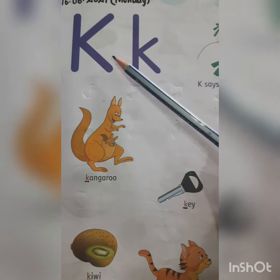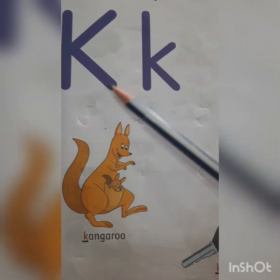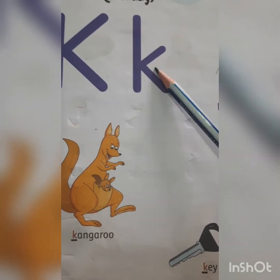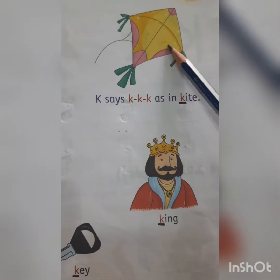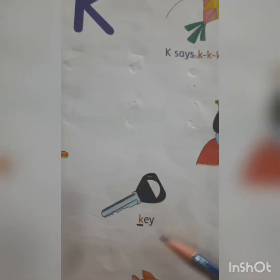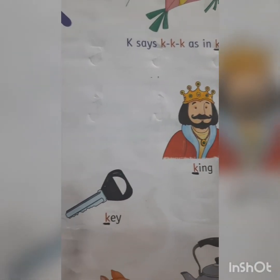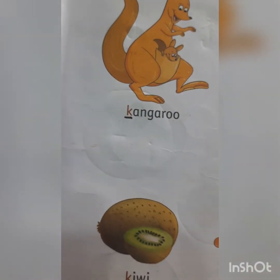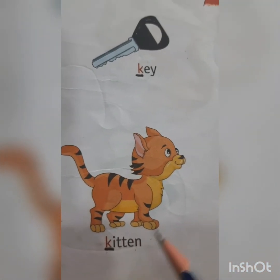Which letter is this children? This is capital K and this is small k — mama K and baby K. What is the sound of letter K? It is 'K' in kite. K-I-T-E. Kite. You have to recognize the letters and say the name of the picture. K-I-T-E. Kite. K-A-N-G-A-R-O-O. Kangaroo. K-E-Y. Key. K-I-N-G. King. K-I-W-I. Kiwi. K-I-T-T-E-N. Kitten.